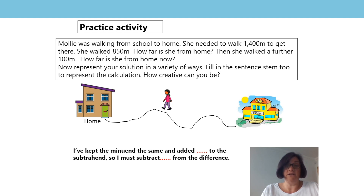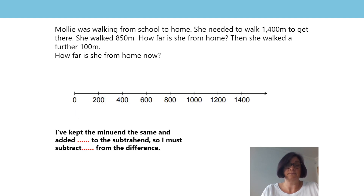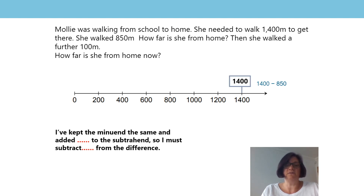This is how I chose to do it. First, I chose to represent my solution on a number line. Molly's total distance from school, the minuend, was 1400 metres. The distance she walked is the subtrahend, which is 850 metres. When I subtract 850 from 1400, the difference is 550.